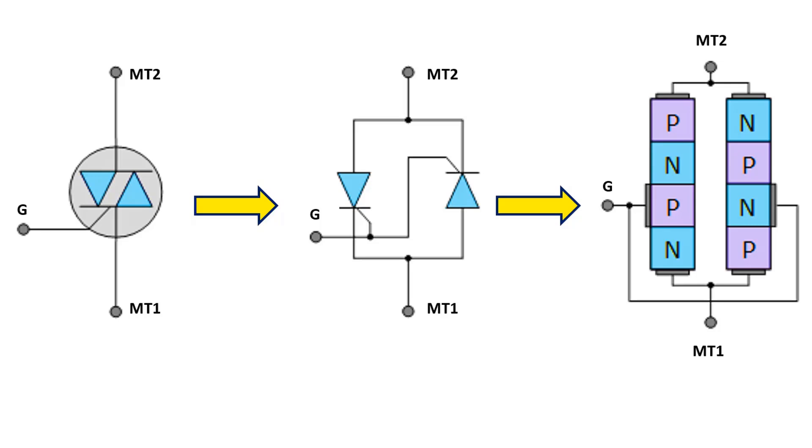TRIAC, on the other hand, is mostly preferred in AC applications since it can flow current in two directions thanks to this structure.